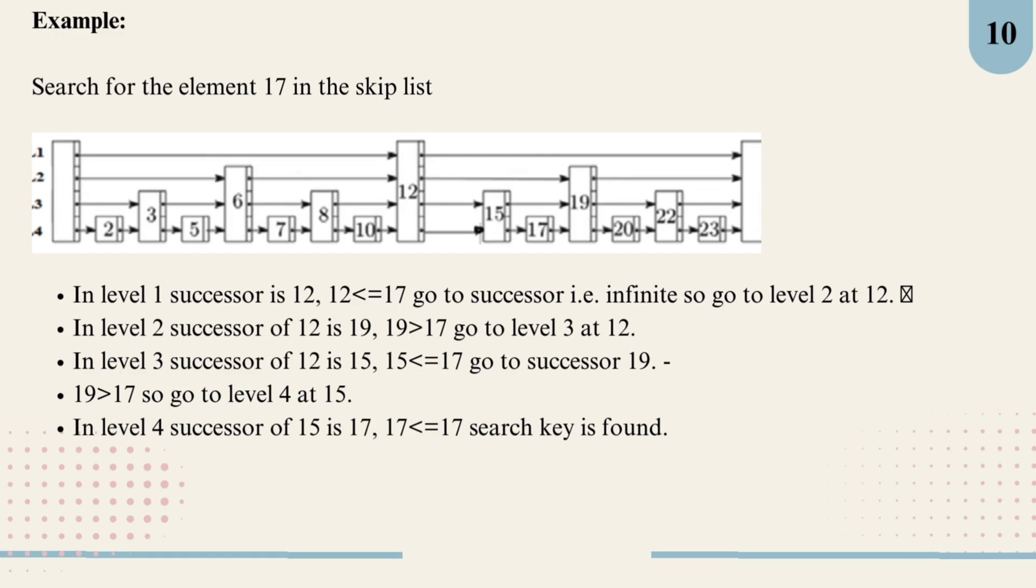But 19 is greater than 17, so we drop down again to level 3 at 12. In level 3, this time the successor of 12 is 15. And since 15 is less than or equal to 17, we move to 15. Still in level 3, the next successor is 19. And since 19 is greater than 17, we go down one more level to level 4 at 15.